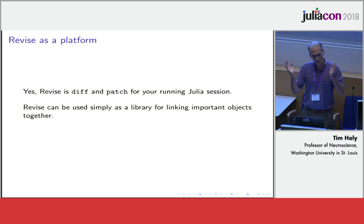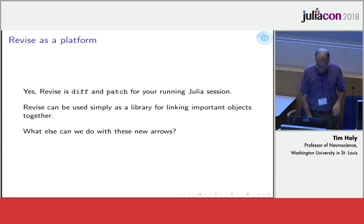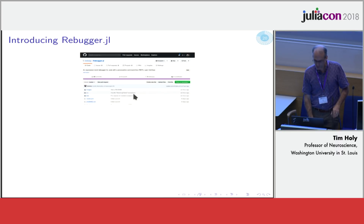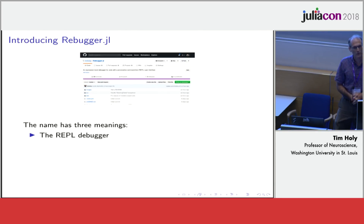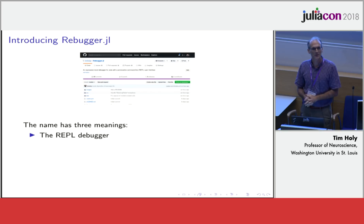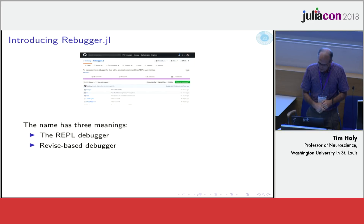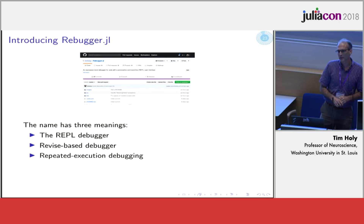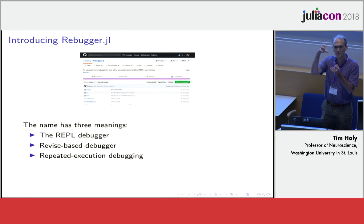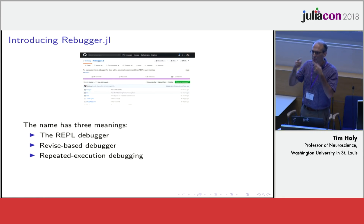My life then went crazy for the next week and a half of absolutely feverish coding, and today I am introducing a new package called Rebugger.jl. Rebugger actually has three meanings: it means the REPL debugger — not the traditional next-step-and-continue kind, as I'll show you in a moment — it's certainly also the revise-based debugger since it uses Revise heavily for all its internal operations. A lot of its power comes from the ability to really isolate out little chunks of code and run them repeatedly to figure out what's going on.